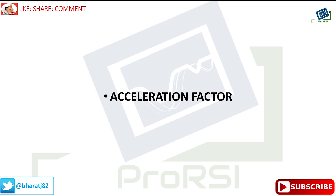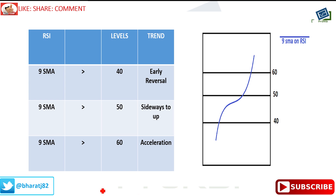Today we'll look at another application of the RSI — basically, moving averages on RSI. We'll be using a nine-period moving average, and it can be a nine SMA or EMA; whatever you feel, it doesn't matter. It doesn't make much difference when we are using it on an indicator rather than on price. In the last session, many queries came in asking whether nine-period SMA or EMA makes a difference — it doesn't. You can use any of them on the RSI on your charts.